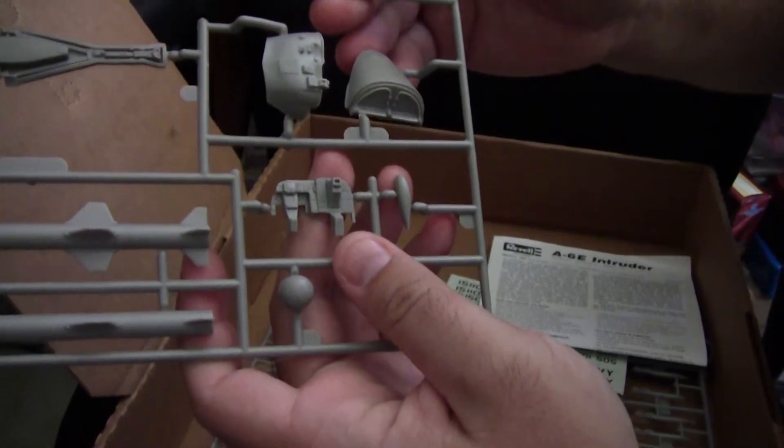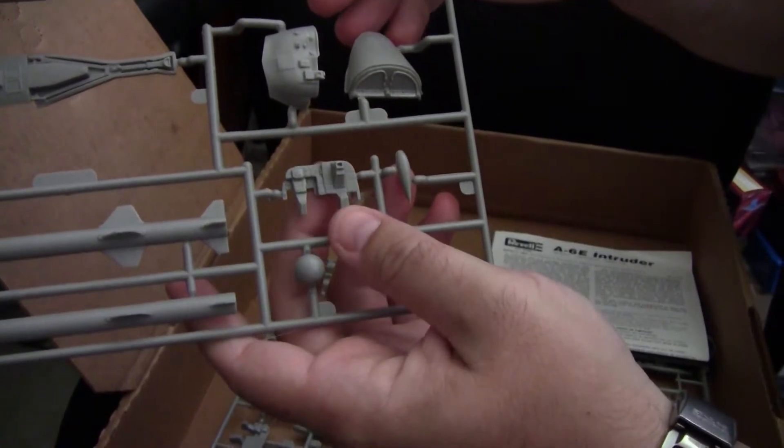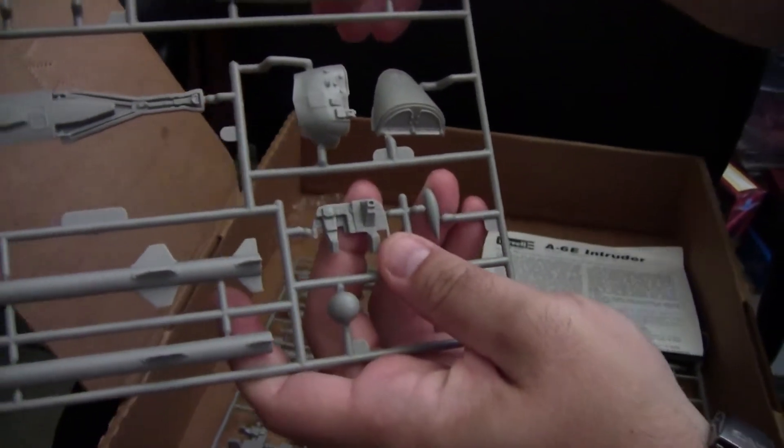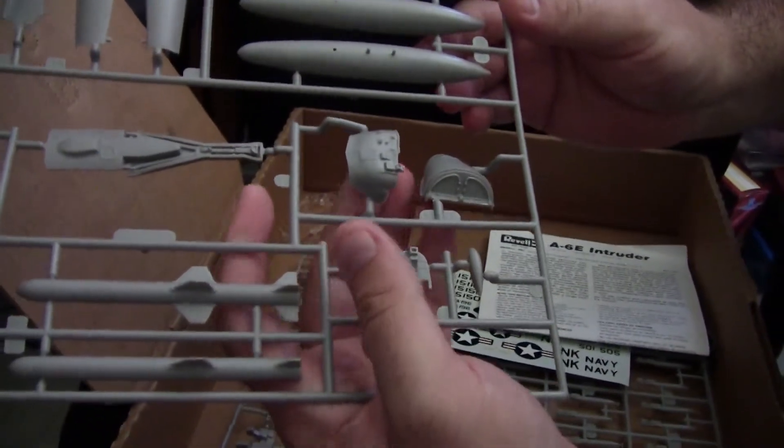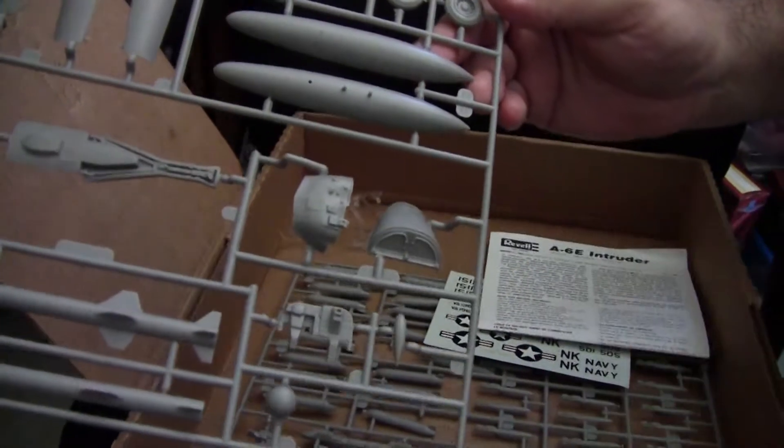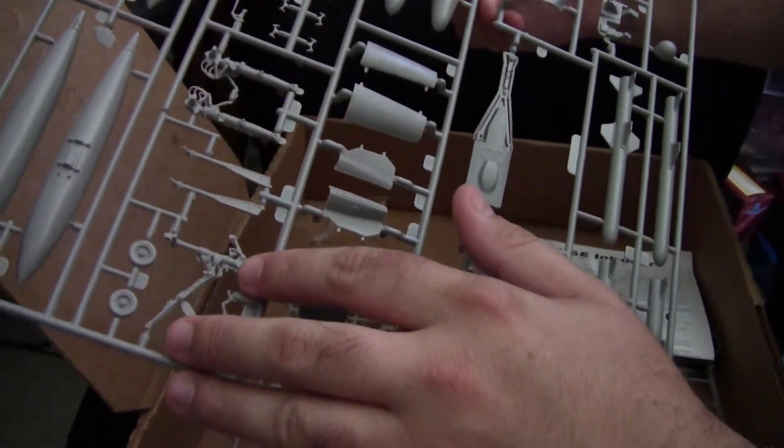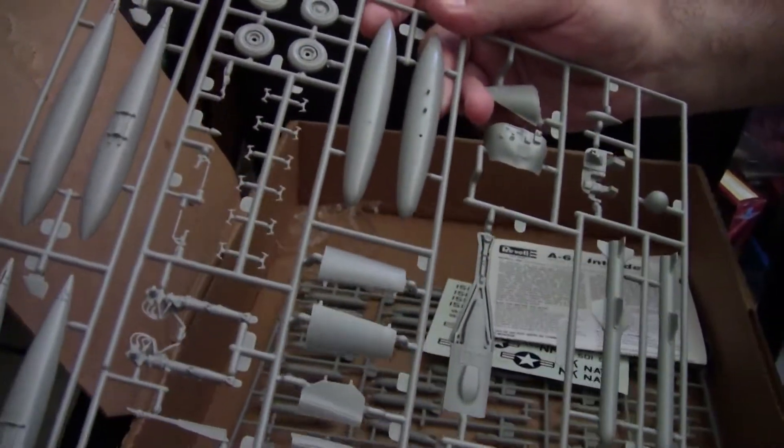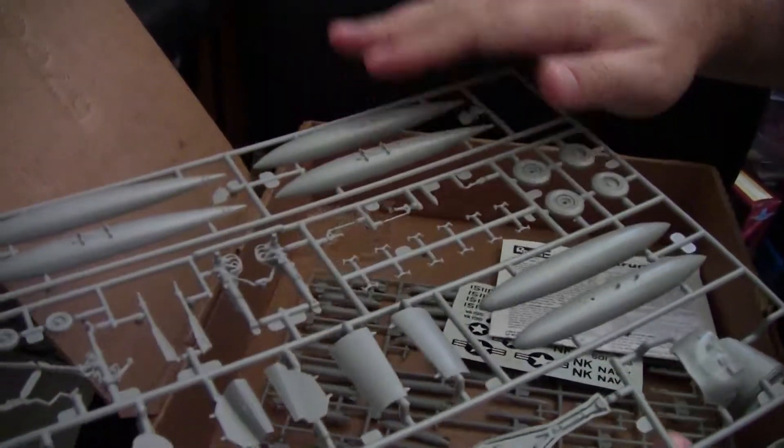Continuing on to the instrument panel, the detailing is typical of Revell in this period. Detail is not that great. I would say definitely look at the aftermarket route. Continuing on, we have our instrument shroud, which is nice, as well as the backhead rest area. Also on this sprue are landing gear, which are nicely detailed and representative. We also have some sway braces, the main gear wheels, as well as a couple of fuel tanks, centerline and on the wings.